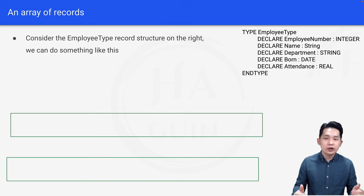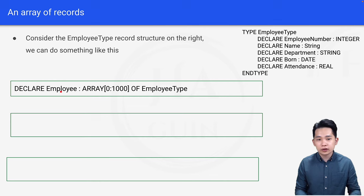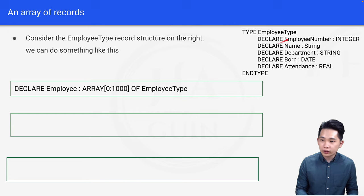So the first step is we have to create the array. How do you create the array? First, DECLARE Employee—this is the array name—ARRAY, lower bound, upper bound, 0 to 1000. This means we have 1001 elements inside this array of EmployeeType. So instead of integer, we are putting this record type, which is EmployeeType here.